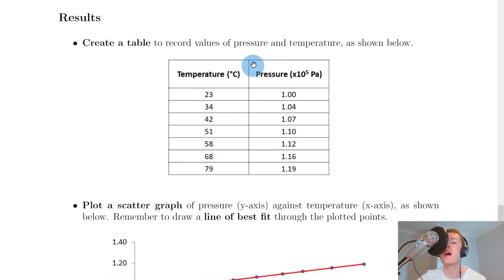During the experiment you could record your values of pressure and temperature in a table as shown here. So you've got temperature in degrees Celsius and pressure in times 10 to the 5 pascals and these are just some sample results that I got when doing the experiment. So at first glance you can see that as temperature goes up the pressure also goes up. But a better way to see that is to plot this on a graph.